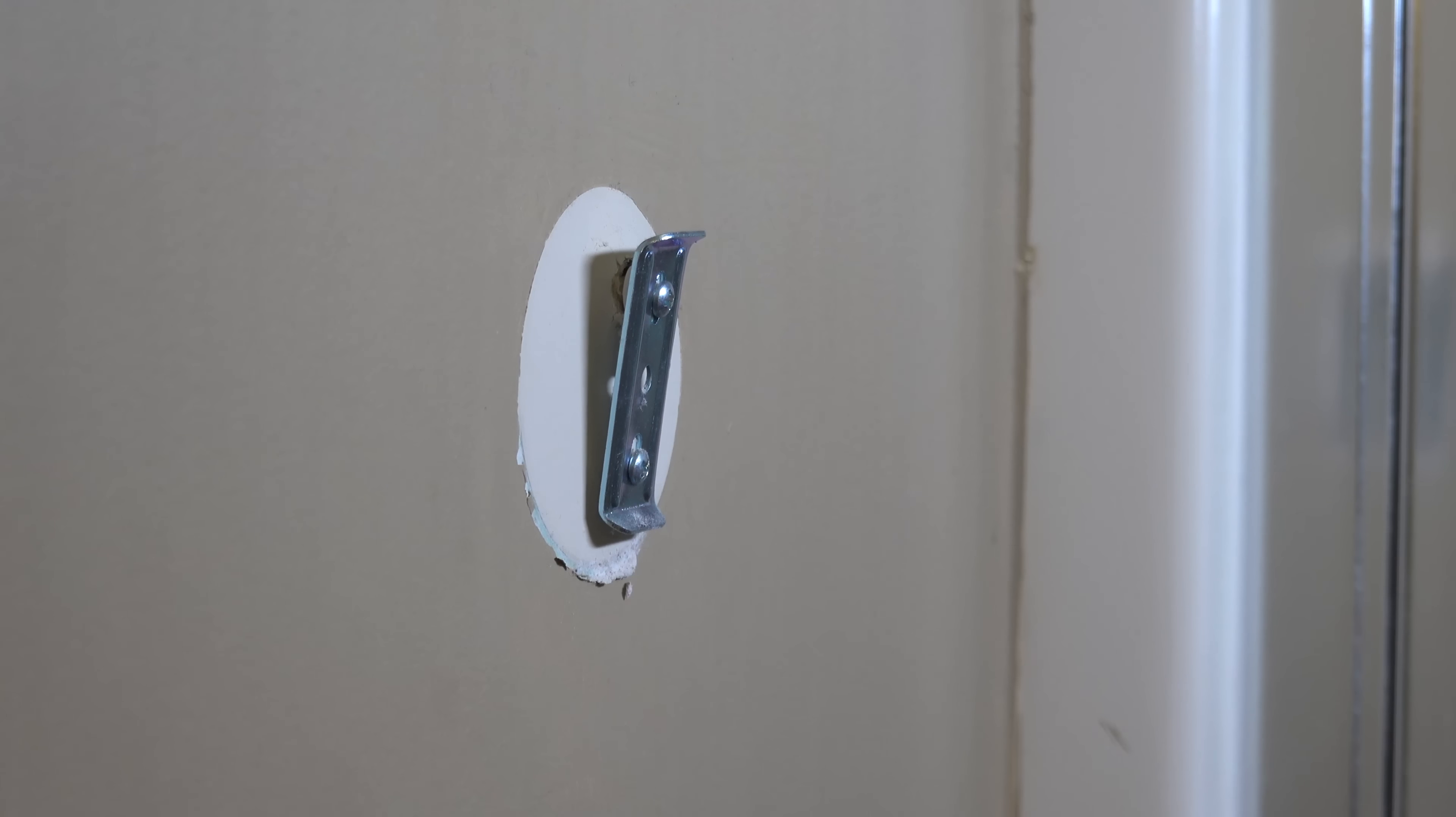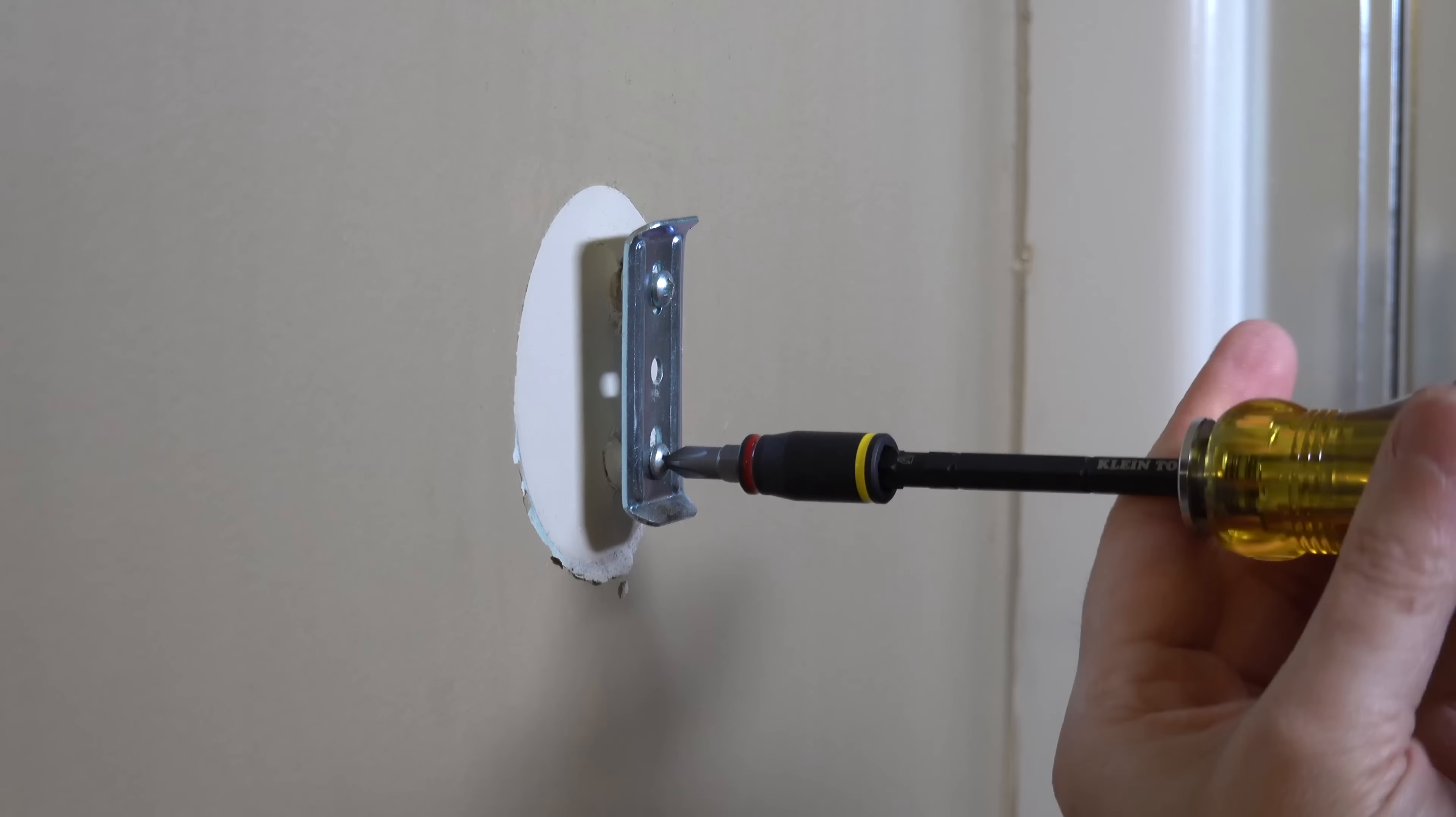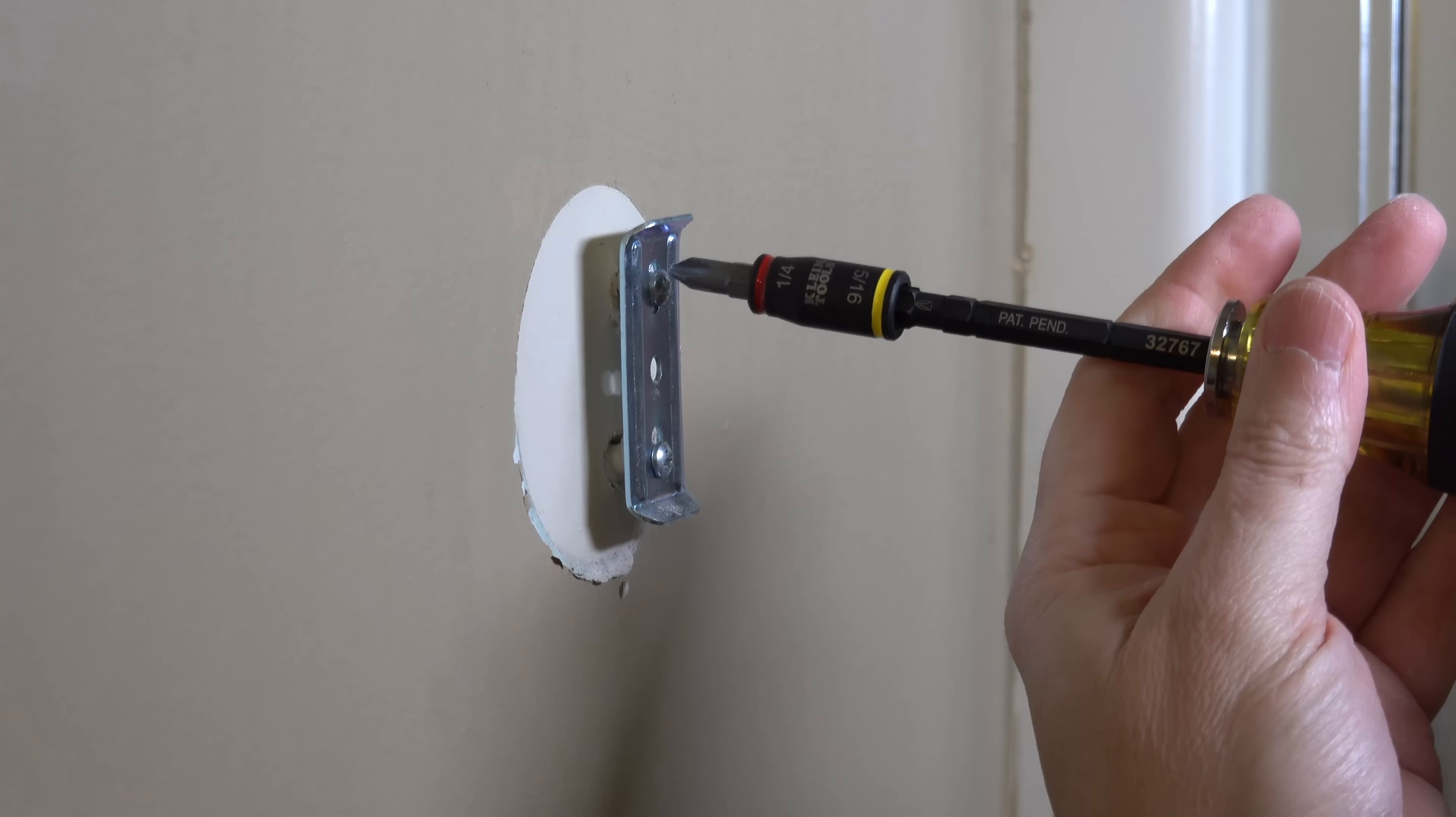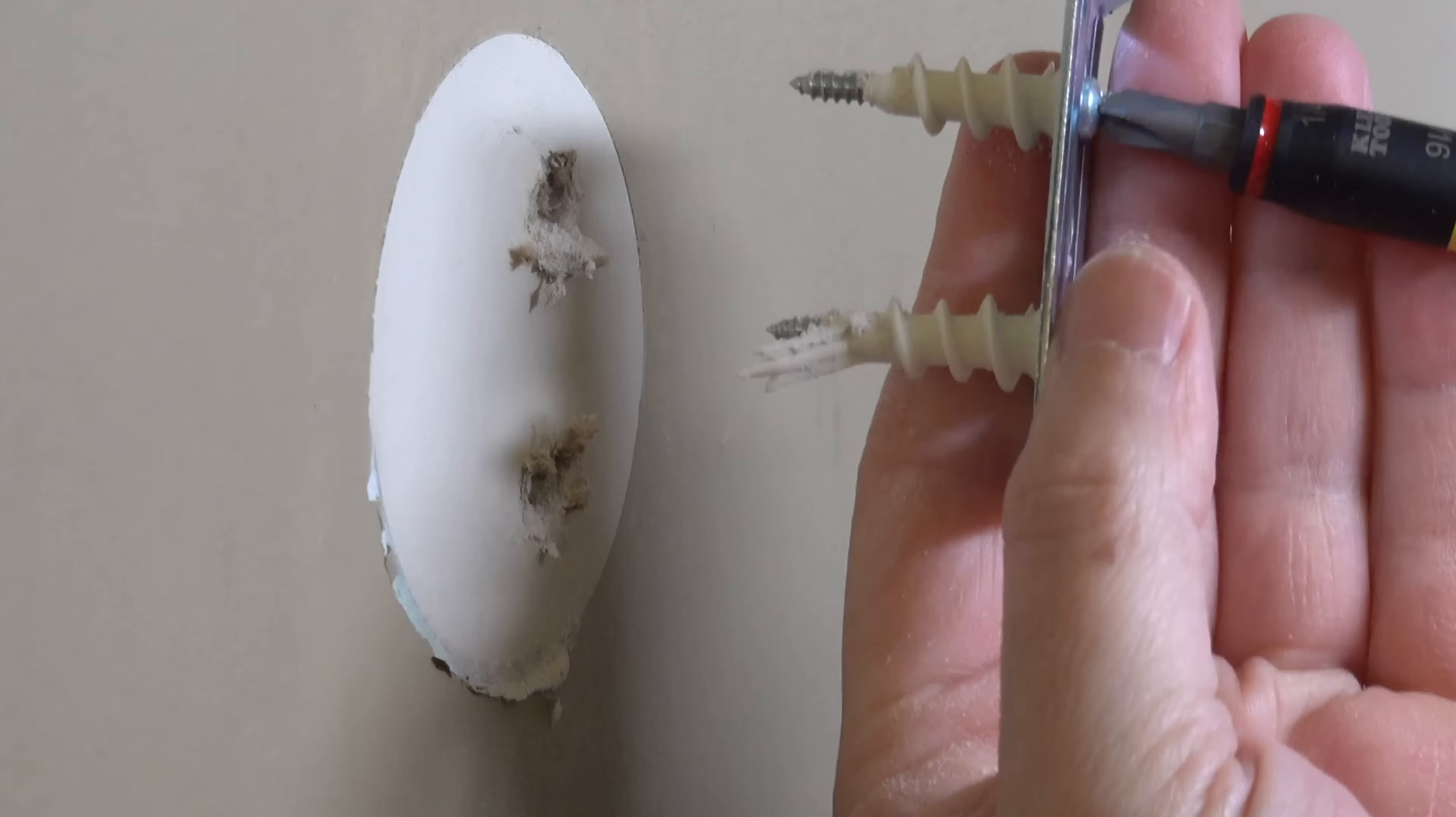Next we need to remove these screws. Now if yours have already fallen out then you don't have to worry about it, but take out any screws that are remaining. The anchors holding those screws in are going to come right out with the screw itself and when you're finished you're going to be left with either one or two holes.